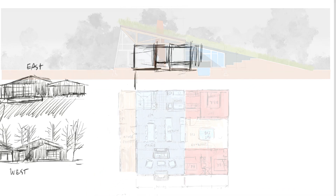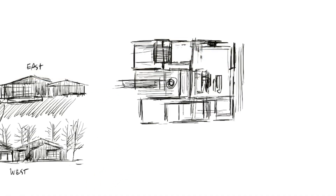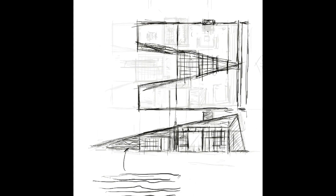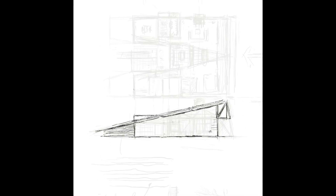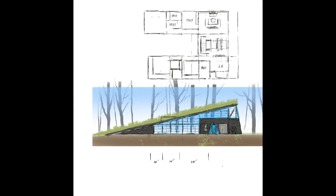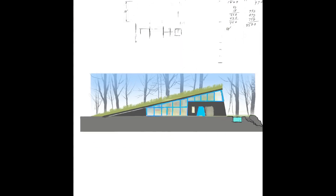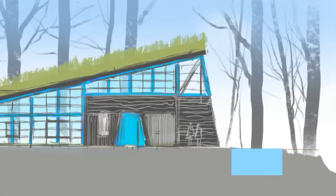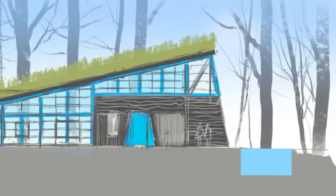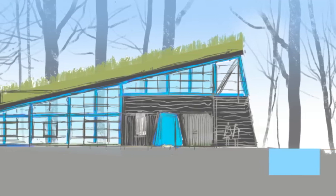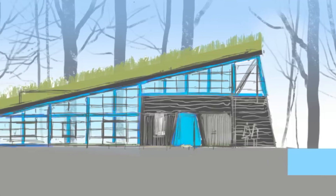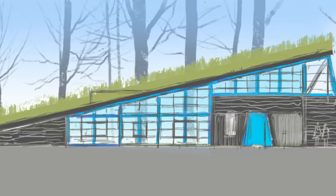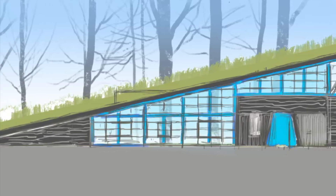I wanted to try a larger variation of the cabin, so I took the original 1,500 square foot cabin and turned it into a 4-bedroom cabin. Don't forget you can download an interactive spreadsheet of all the Procreate videos on my channel so you can find the Procreate video you need when you need it — just tap on the link in the description below.